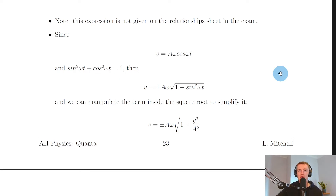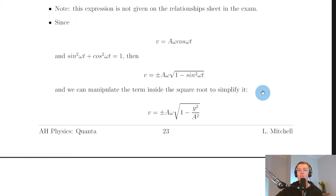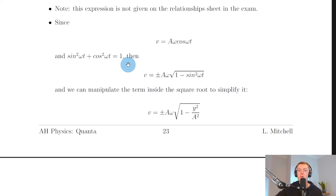We don't just want an expression for the maximum velocity — we want a general expression for the velocity of the object undergoing SHM. We've already differentiated y equals a sin(ωt) to get v equals aω cos(ωt). Now we use the trigonometric identity — which you may remember from maths — sine squared x plus cos squared x equals one. Written in terms of ωt: sin²(ωt) + cos²(ωt) = 1. Rearranging for cos²(ωt) gives 1 minus sin²(ωt), and taking the square root gives cos(ωt) equals the square root of 1 minus sin²(ωt).